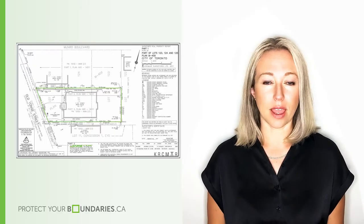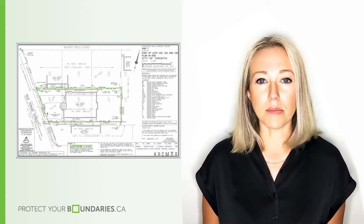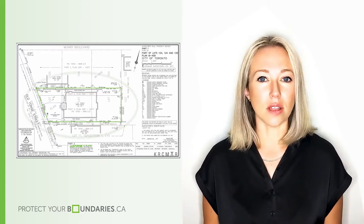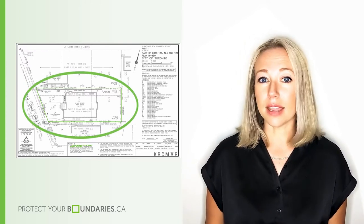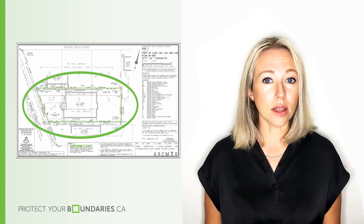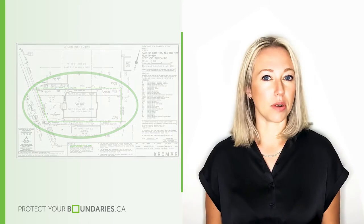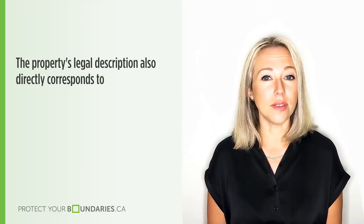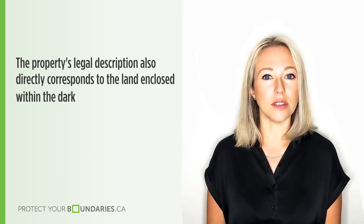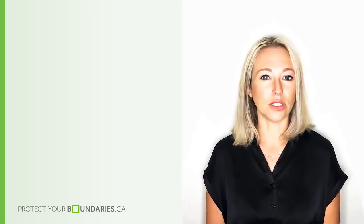If you are looking at your survey and wondering where you can find the boundary line, you will see it represented by a dark solid line that goes around the perimeter of the property. Any land or features not enclosed within this dark solid line is not included in the property. The property's legal description also directly corresponds with the land and features enclosed within the dark solid lines. This line allows you to easily see the boundary lines of the property that was surveyed.